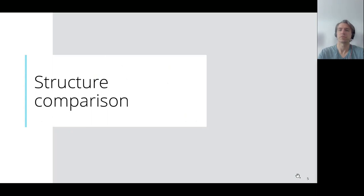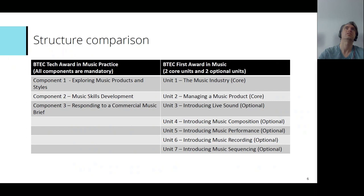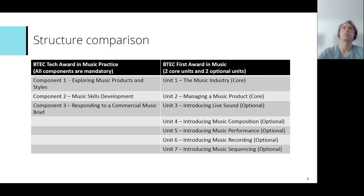So obviously the BTEC First Award in Music had two core units and two optional units to choose from. That has changed in terms of the tech award — there are three mandatory components. However, there is some flexibility in terms of the approach through those components and what you can cover in terms of skills.